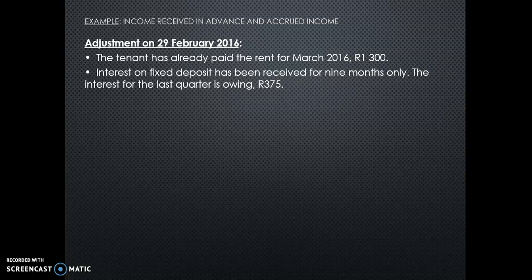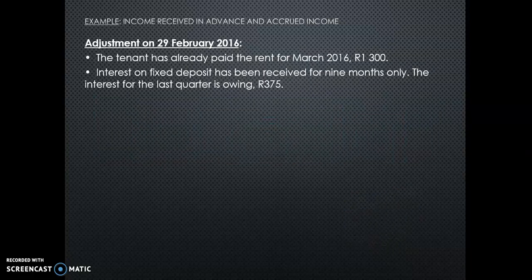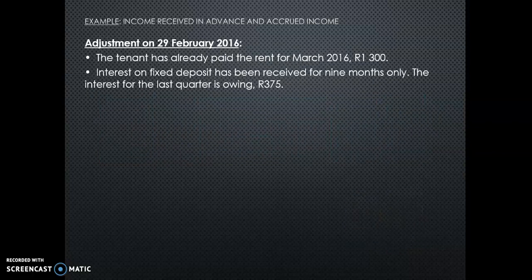They will give you the amount in the fixed deposit — here it is 10,000. They give you the interest rate, so you can work it out. It should be 1,500, but it is only 1,125. So you can work out the difference — here they give you the difference of 375.